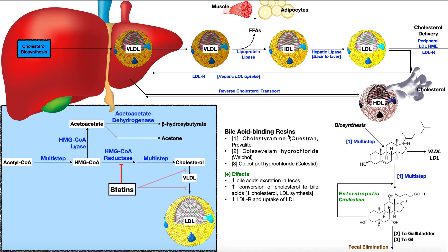Then we have what are called the bile acid binding resins. These are complex molecules that basically bind to bile acids in the GI tract and promote their excretion. Cholesterol can be converted to bile acids through an enzymatic pathway. Bile acids are made in the liver, stored in the gallbladder, and upon eating a fatty meal, moved into the small intestine where they emulsify fats to allow their absorption. Not all bile acids are eliminated in the feces — many are recirculated back into the gallbladder to be reused. That's called enterohepatic circulation.